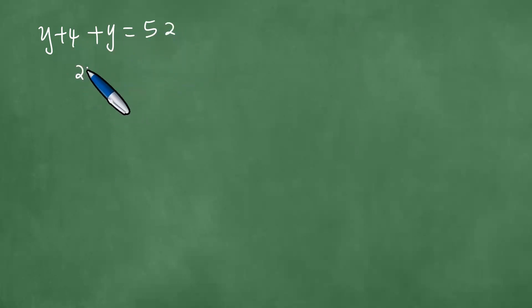Y plus y gives us exactly twice y equals 52 minus four gives us 48. Dividing both left and right by two gives us y equals 24.